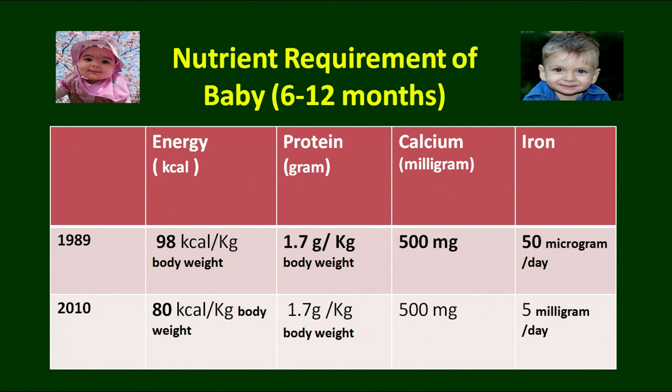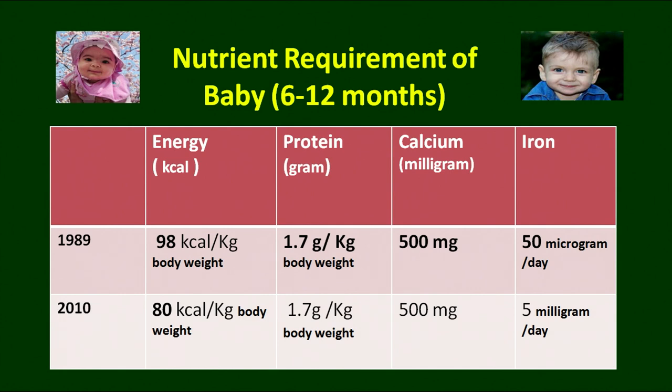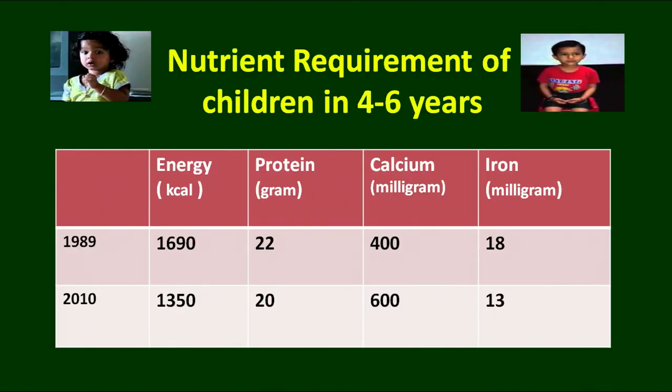Please note specifically the unit of each nutrient. The updated 2010 values show 80 calories per kg body weight for energy. For children between four to six years, you can see how much energy and protein they require. Calcium was initially 400 milligrams and the recent requirement is 600 milligrams.